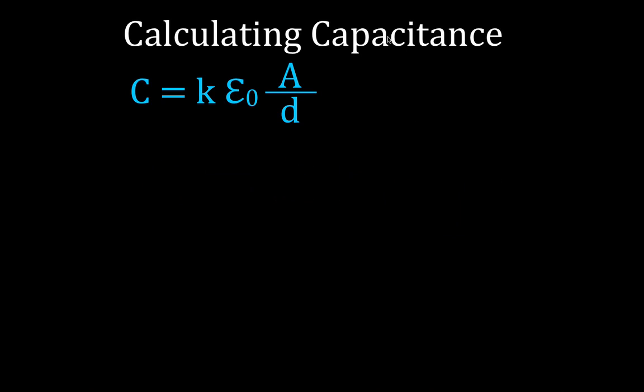The equation is simply C is equal to K epsilon naught times A divided by D.